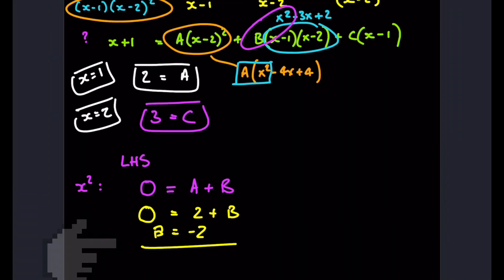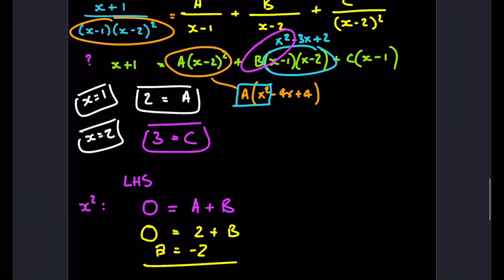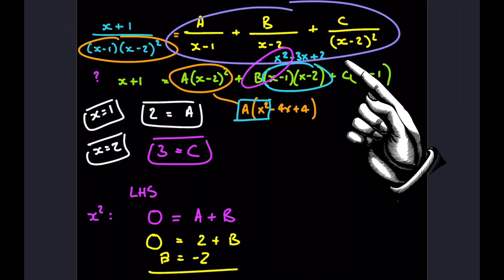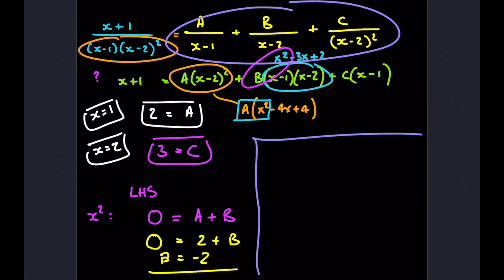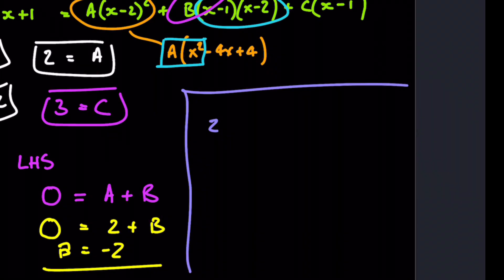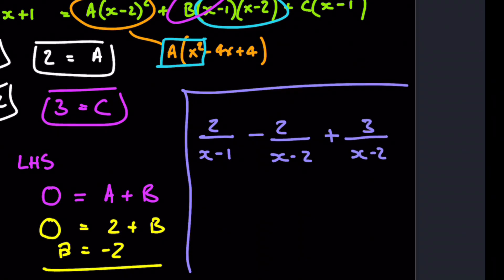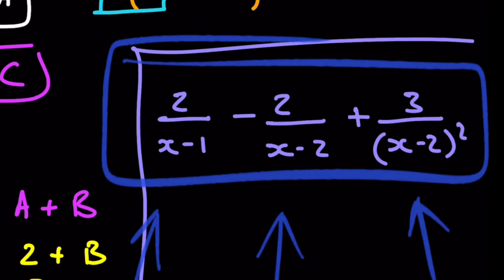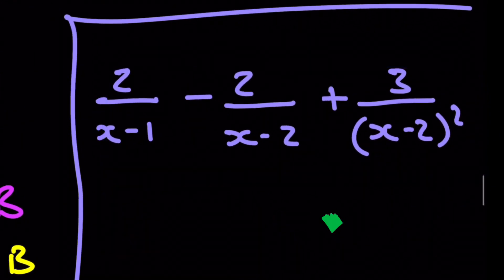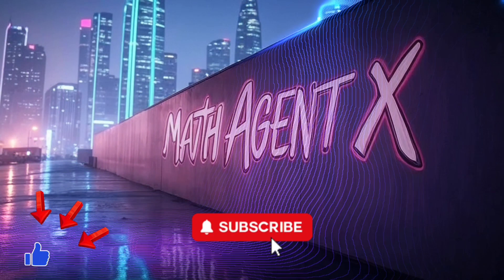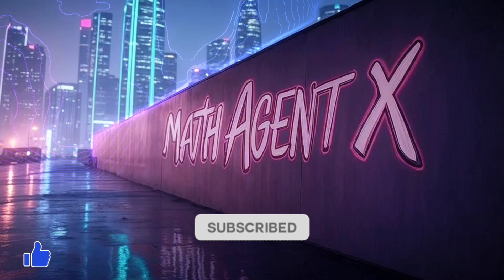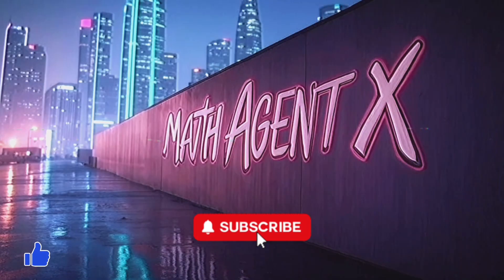So the final expression for Question 2 is: 2/(x − 1) − 2/(x − 2) + 3/(x − 2)². And that's our result. Let me know how you get on in the comments below, and don't forget to like and subscribe to the channel. See you next time.